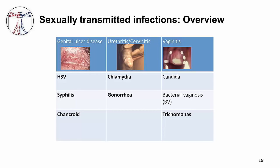Here's a summary table showing each of the main sexually transmitted infections placed in one of three boxes: genital ulcer disease, urethritis or cervicitis, and vaginitis. Thank you for listening and see you soon.